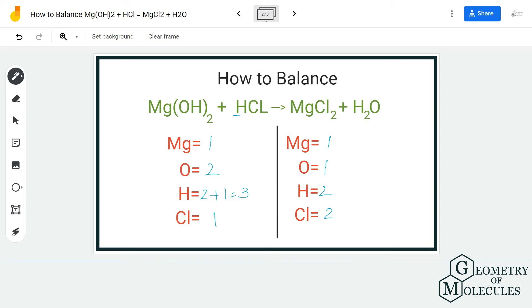For balancing this equation we are going to put a coefficient 2 before H₂O so that we will have two atoms of oxygen on the product side as well. But this in turn will also change the number of hydrogen atoms for the product side, so update that as well. Now we have two atoms of oxygen on both sides and four atoms of hydrogen on the product side.